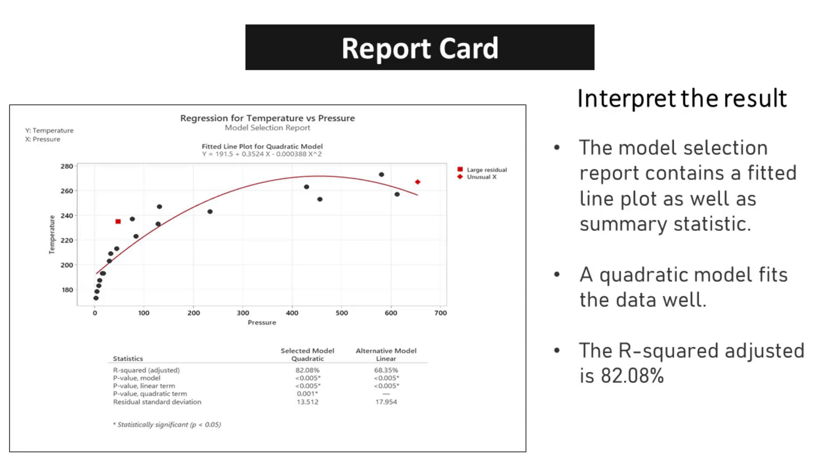The R-squared adjusted value for the quadratic model stands at an impressive 82.08%. This indicates that 82.08% of the variability in the data is accounted for by the quadratic model. Such a high R-squared value reinforces the reliability and validity of our model, giving us confidence in its predictive capabilities.